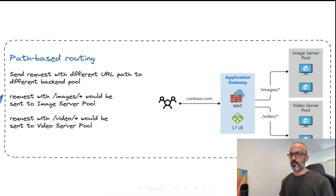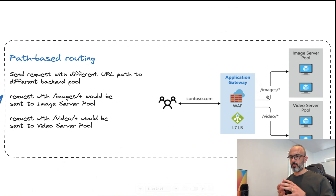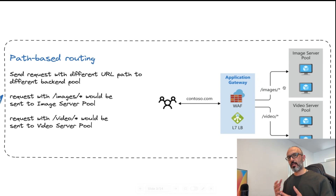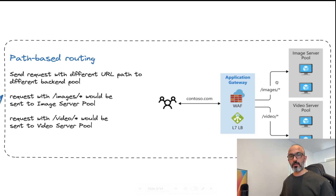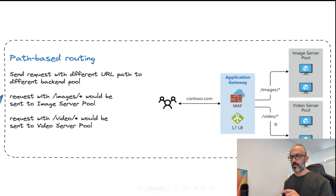The first methodology for forwarding traffic is called path-based routing. Azure Application Gateway uses the URL path of your application, and based on a specific keyword — in this case the word 'images' — it forwards traffic to a different pool of servers, like the image server pool. If the URL path contains 'images', it sends traffic to the image server pool. If the traffic contains 'video', it sends it to the video server pool. This is path-based routing: depending on what is in the path, a rule load-balances traffic to the related backend pool.